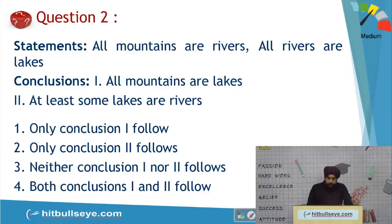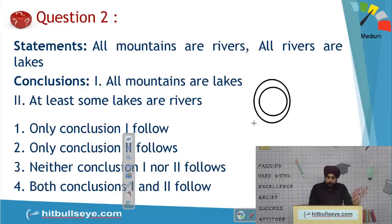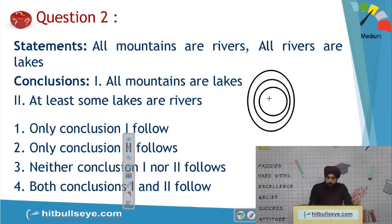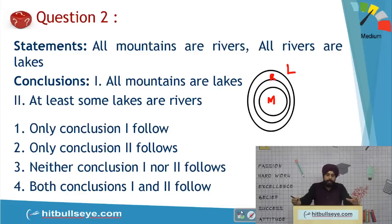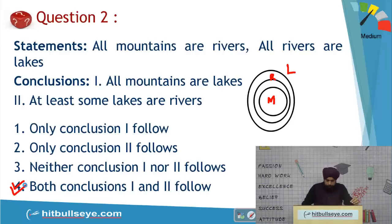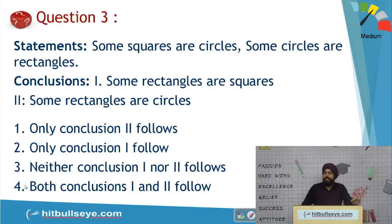Next question: 'All mountains are rivers' and 'All rivers are lakes.' Mountains (M), rivers (R), and lakes (L) are represented as nested circles. You can clearly see that all mountains are lakes, and at least some lakes are rivers since part of lakes is covered by rivers. Both conclusions are true, so the answer is Choice 4.